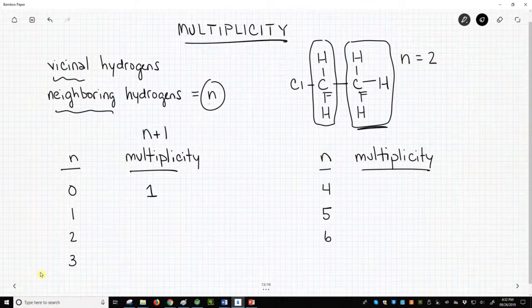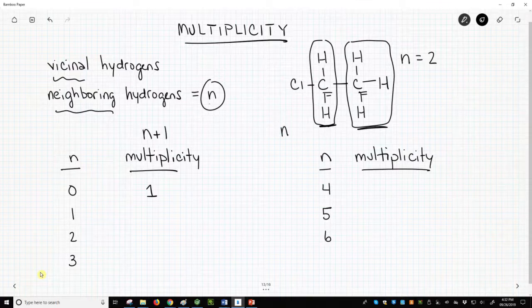Similarly, the hydrogens on the CH2 group have three vicinal neighbors. For these hydrogens, the CH2, N equals 3.